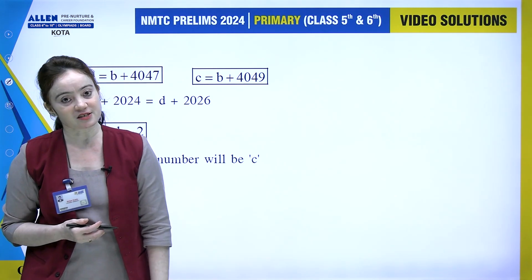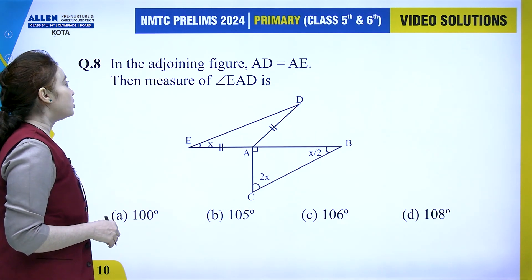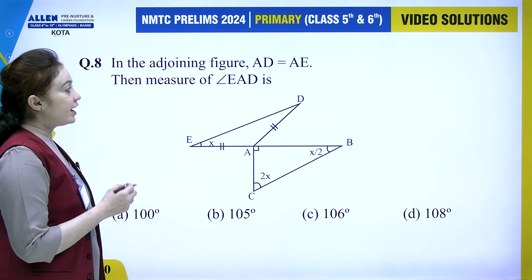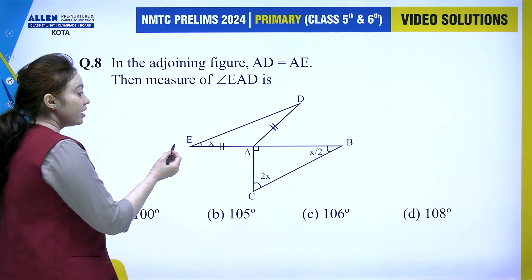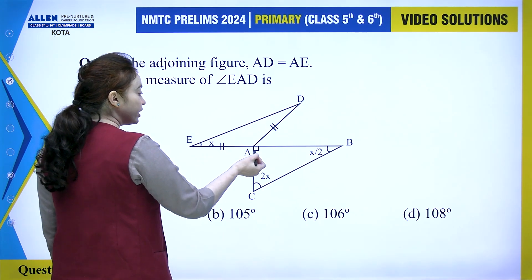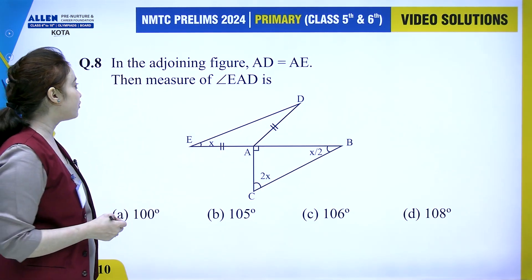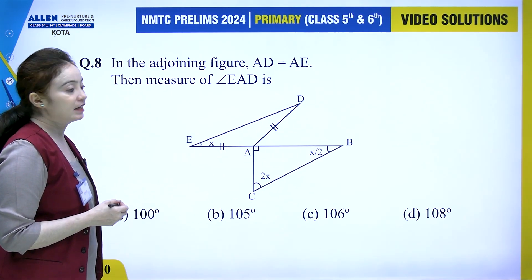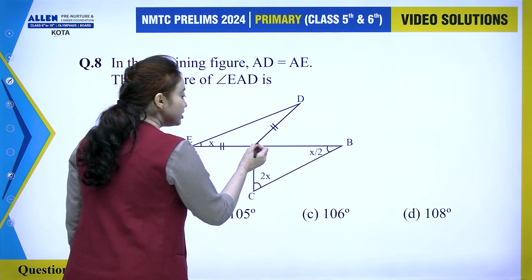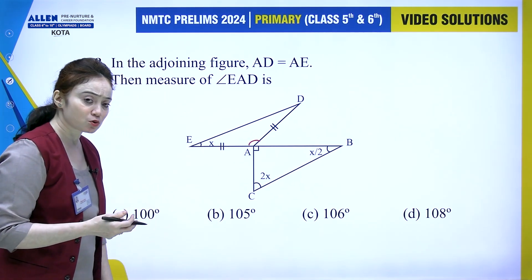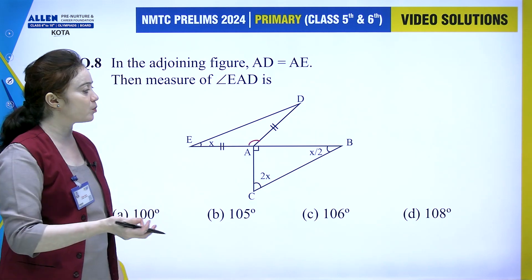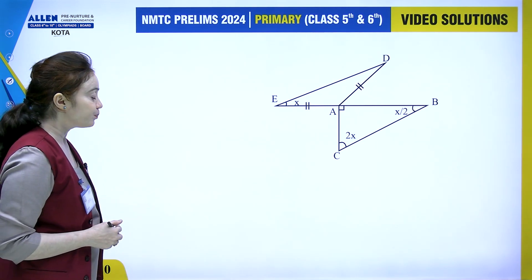Let's move to the next problem. In the adjoining figure, AD equals AE is given. We need to find the measure of angle EAD. This is a simple geometry question.